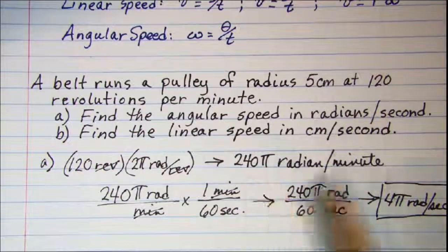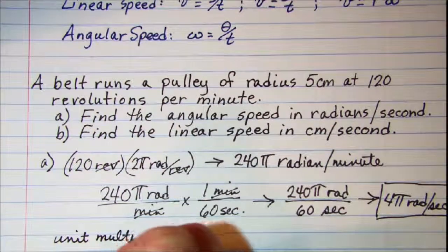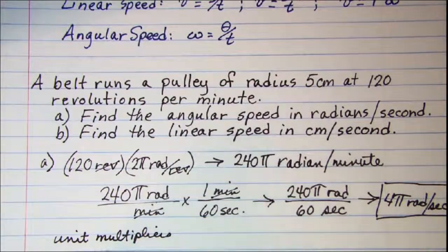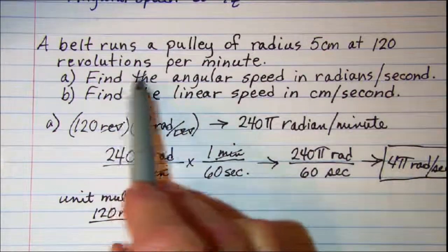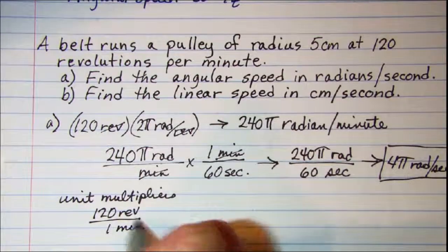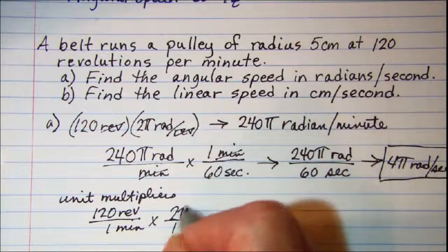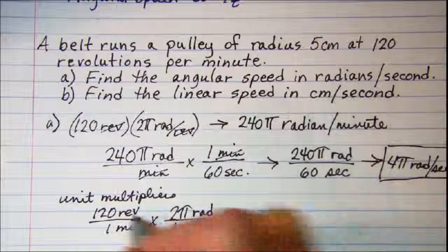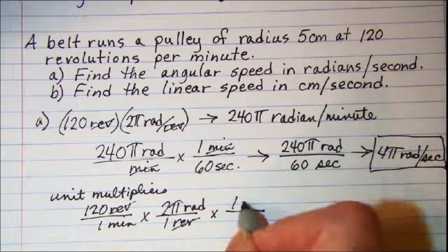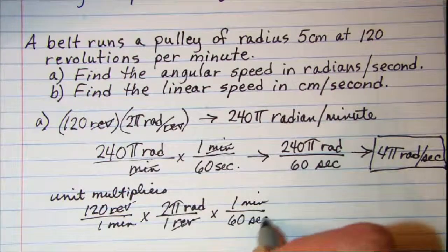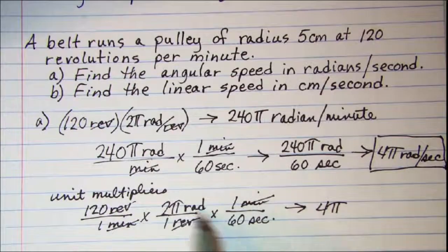We could have started with our 120 revolutions per minute and used straight unit multipliers. So 120 revolutions in one minute. I know that one revolution is the same as 2π radians. My revolutions cancel off. And then I need to go to seconds, so I would go 1 minute per 60 seconds and my minutes cancel. So this gives us 4π radians per second.